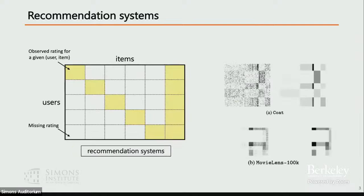When we think about matrix completion applied to recommendation systems, the data is interesting looking. If you look at two canonical datasets — the coat dataset and MovieLens — you can see a kind of clustering happening within the data. Certain users tend to rate the same kinds of movies and nothing else. People who like horror films might only watch horror films, and people who like action films only watch action films. So you get this kind of block sparsity, which is quite ubiquitous in recommendation systems.